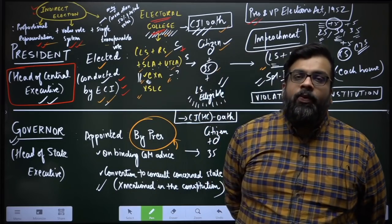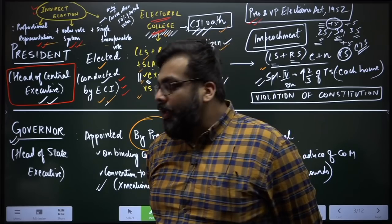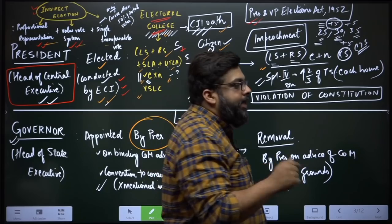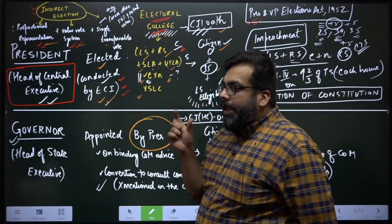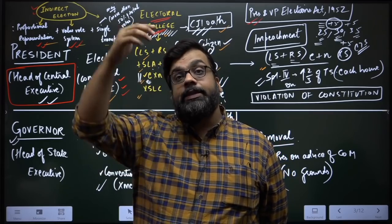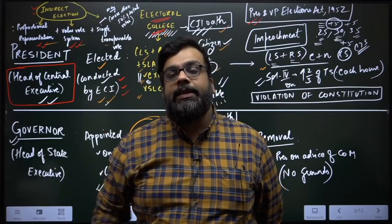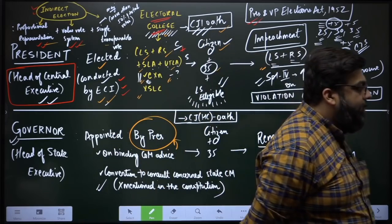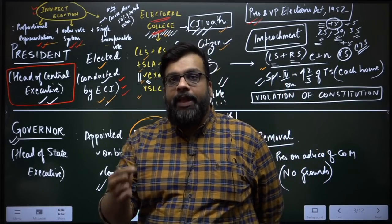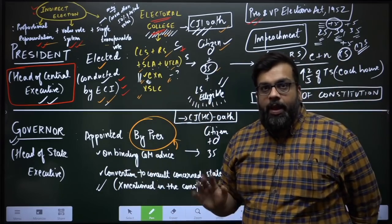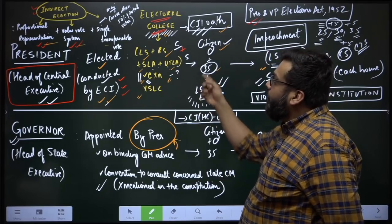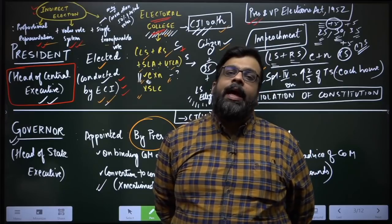Only elected members of the houses participate; nominated members do not. This is because nominated members do not enjoy the democratic mandate. Applying the first golden rule, to elect the first citizen of the country, you yourself must have been elected. Through a recent constitutional amendment, the Lok Sabha and state assemblies no longer have nominated members, but the Rajya Sabha still has constitutionally provided nominated members who do not participate in presidential elections.